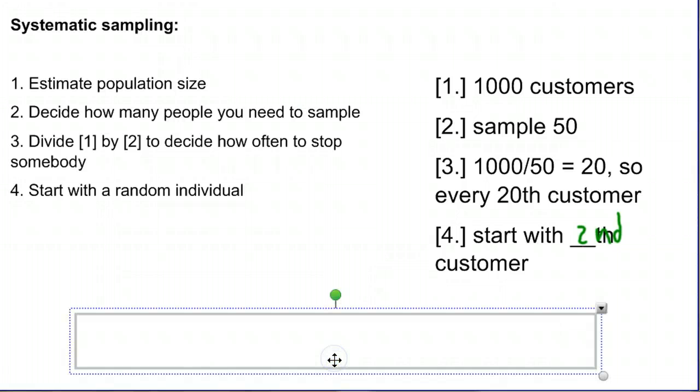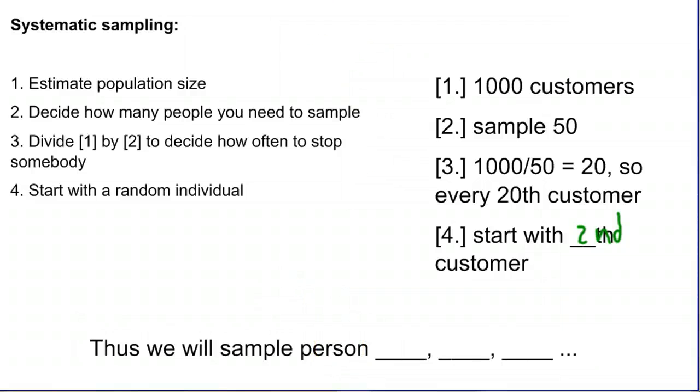And if we're going to start with customer number two, we need to, from there, sample every twentieth person so we keep adding 20. So we start with two, and then we would sample person number 22, and then number 42, and so forth as people walk through the door. And you would keep doing that until you reach your sample of 50, or until you finished up whatever time you were sampling for.